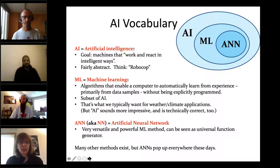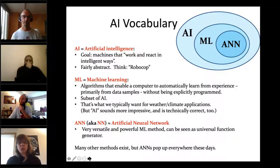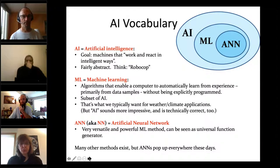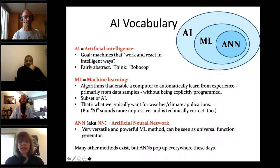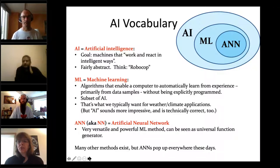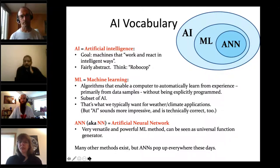Starting with vocabulary: lots of people use the term AI for artificial intelligence, while others use machine learning. We wanted to spend a moment on the differences. ANN means artificial neural network, ML means machine learning, AI means artificial intelligence. If you look at the diagram, artificial neural networks are a subgroup of machine learning — one type — and machine learning is a subgroup of AI.